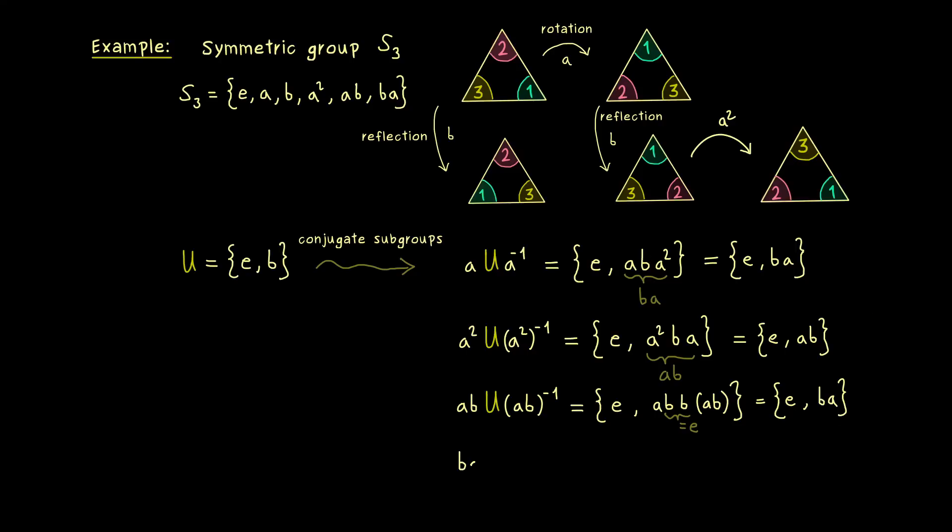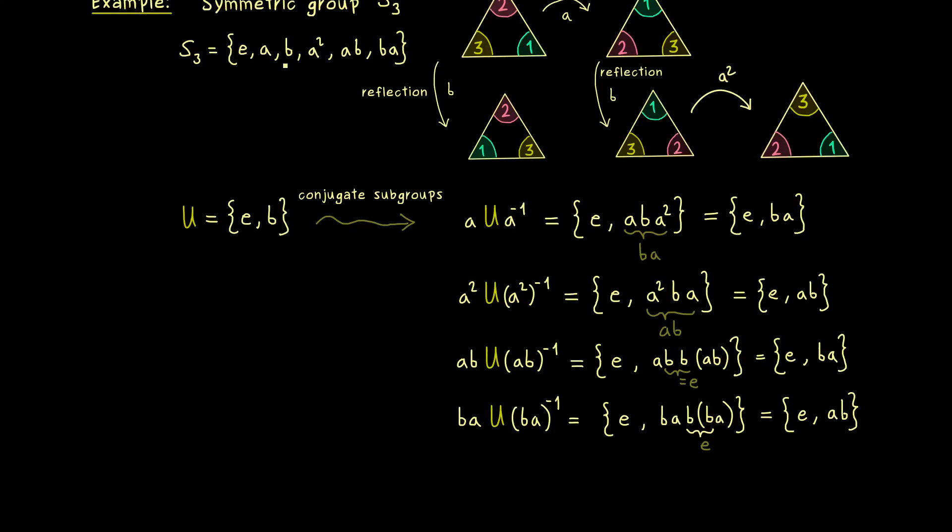And then finally let's take our element ba. And maybe there you can already guess the result. Indeed everything is very similar to before, because also here we can use that the element ba is self inverse. Moreover, also not hard to see, we have b² in the middle again. So what remains is simply ba². And there please check that this is equal to ab. So also there we don't get a new subgroup out. And now in order to make the list complete, we should also put in e and b. However there you should just see, that in both cases we just get out our original group U. And now you can count, we have exactly three conjugate subgroups to U. This means the equivalence class of U consists of three elements.